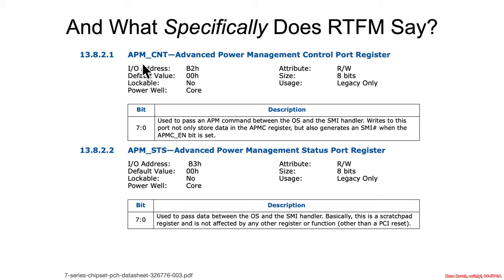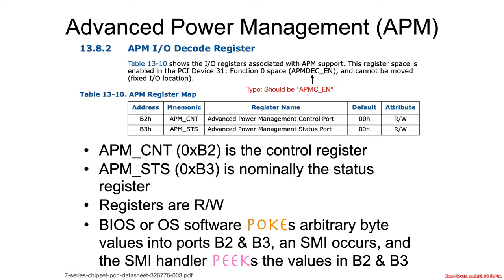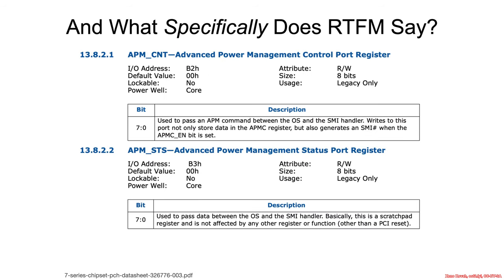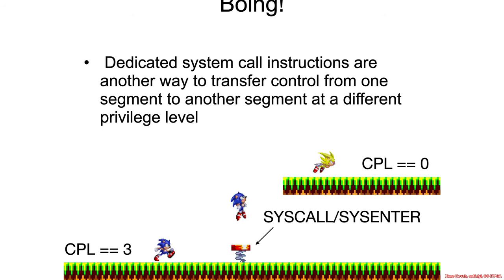Recapping from that big list: if SMI enable and APMC enable are set, writes to APMCNT — port B2 — cause an SMI. So it's only port B2 which is causing the SMI.